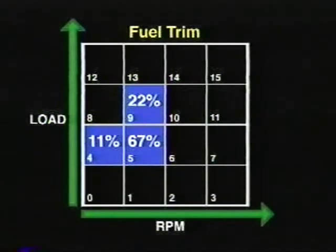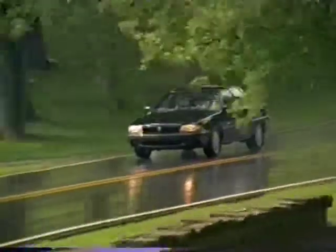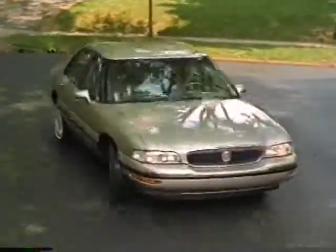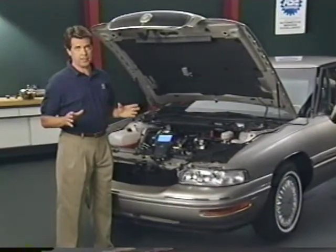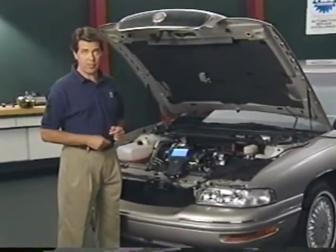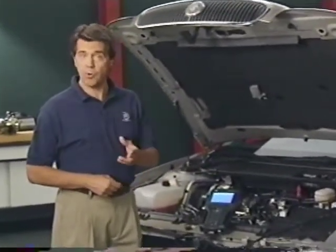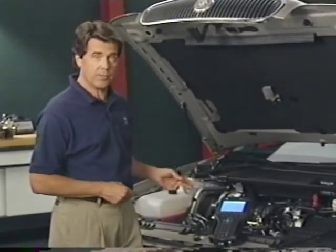On top of that, the values in cell 5 carry 67% of the importance, cell 9 carries 22%, and cell 4 carries 11%. Converting cells 4, 5, and 9 into driving conditions gives an approximate speed range of about 25 to 45 miles per hour and load ranges from about half throttle to light cruising throttle — though this varies somewhat from vehicle to vehicle. The point is that not all fuel trim-related drivability problems will set a code. Even without a fuel trim code, it's worth considering fuel trim as a possible cause of the drivability condition.